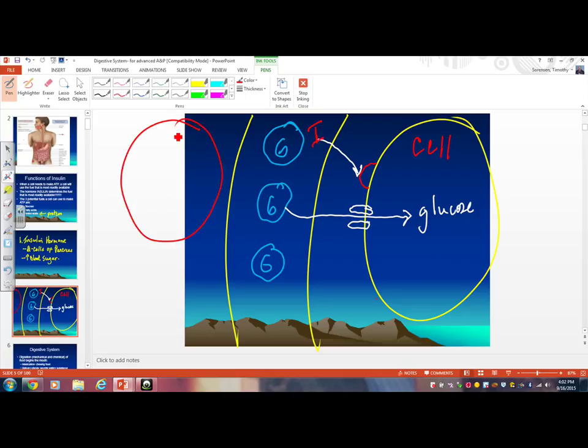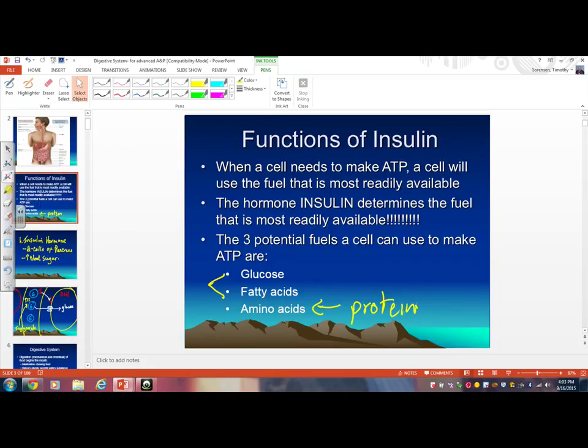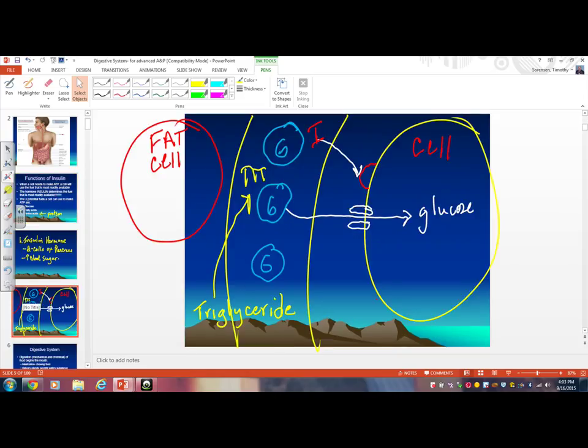Now you don't just eat sugar, right? You would hope not. So in addition to, that's one of the functions of insulin, here's another function. What's in a fat cell? I'll tell you, it's fat. So when you eat, the fat that you ate gets transported around in your blood in the form of triglyceride. There's a triglyceride. Now look, again let's go back to slide number one. When a cell needs to make ATP, a cell uses the fuel that's most readily available.